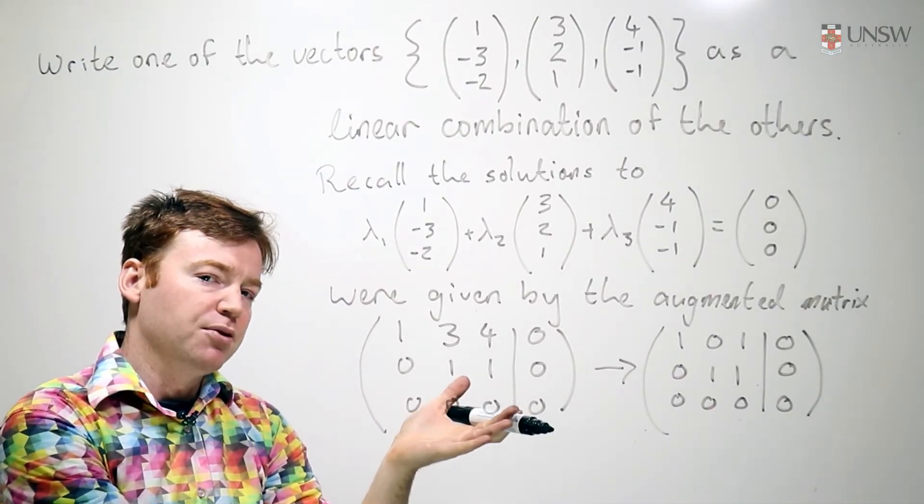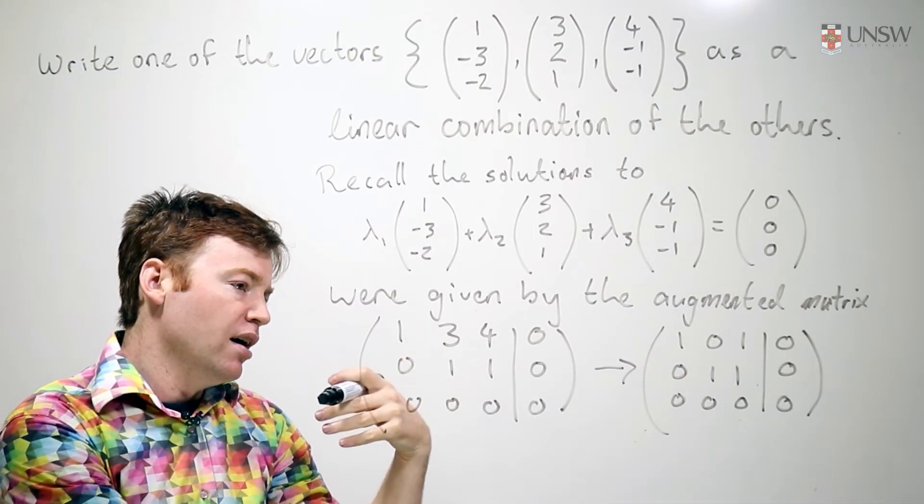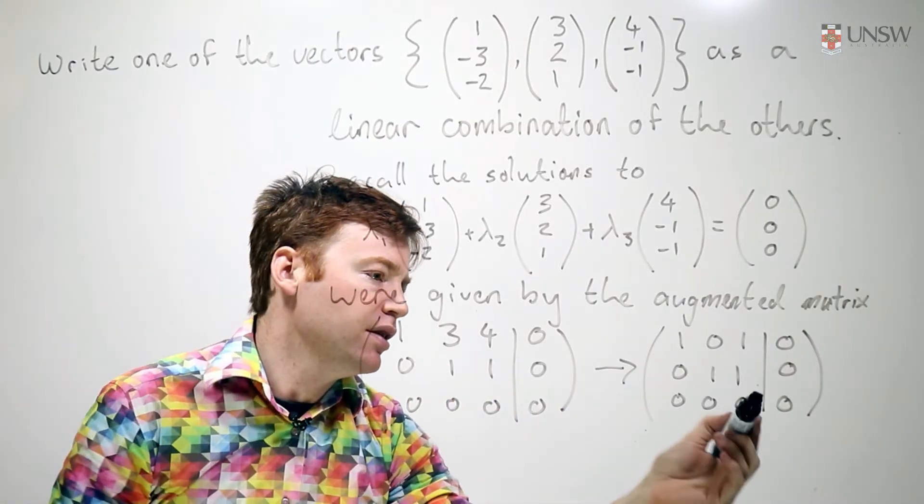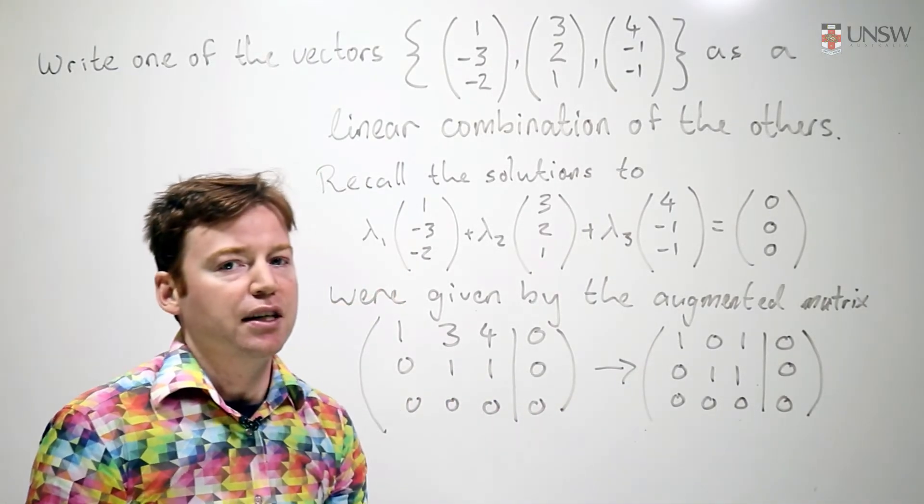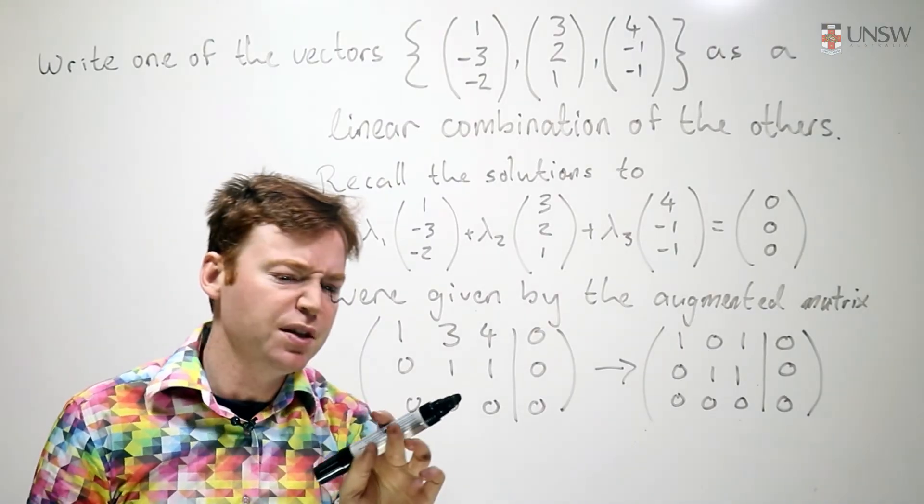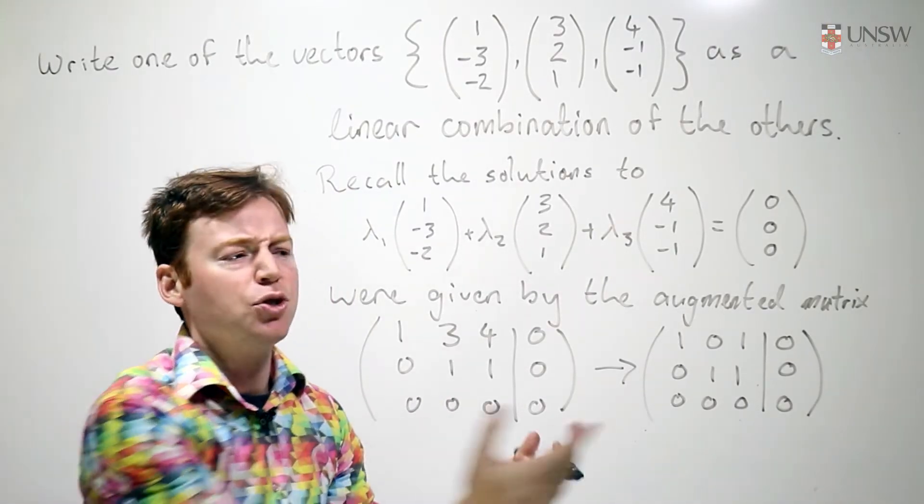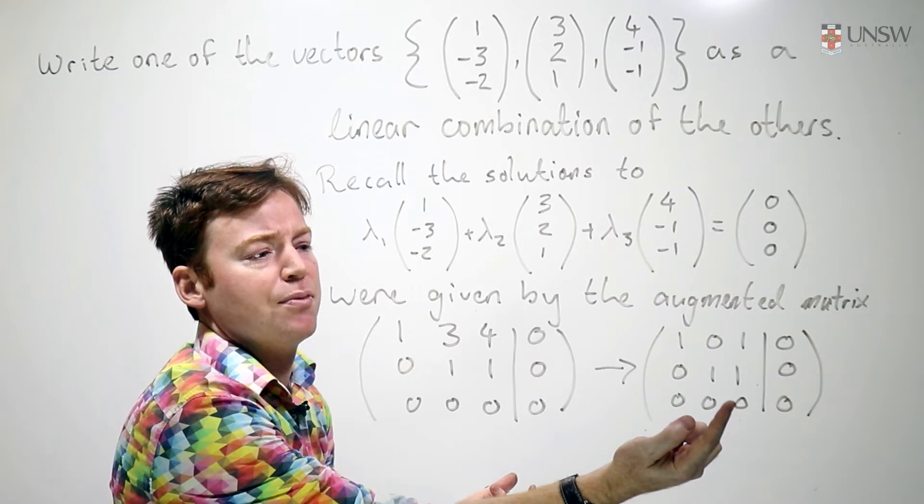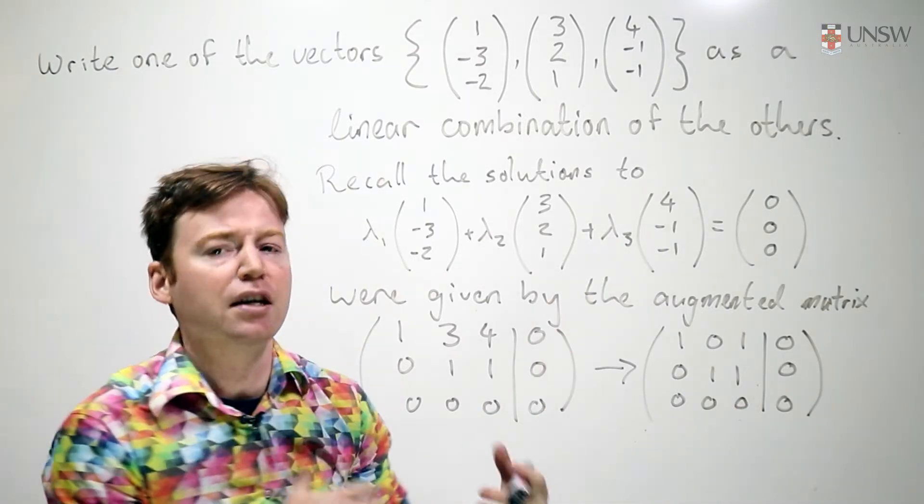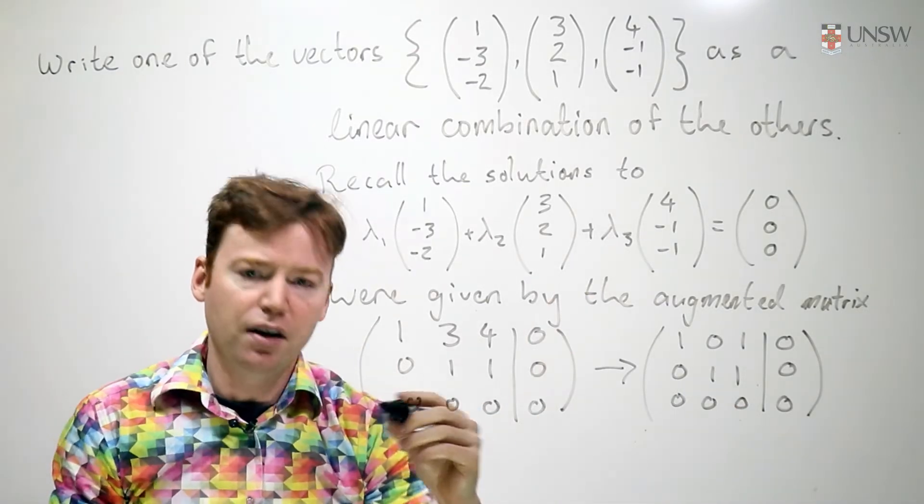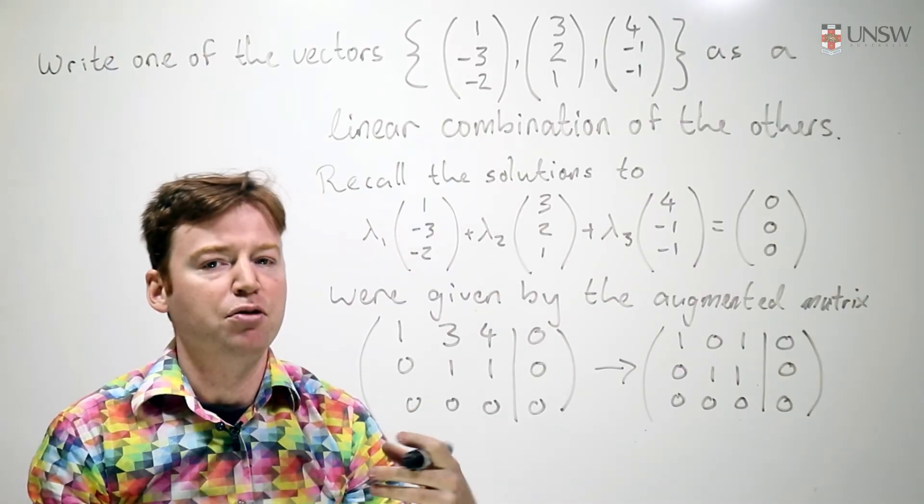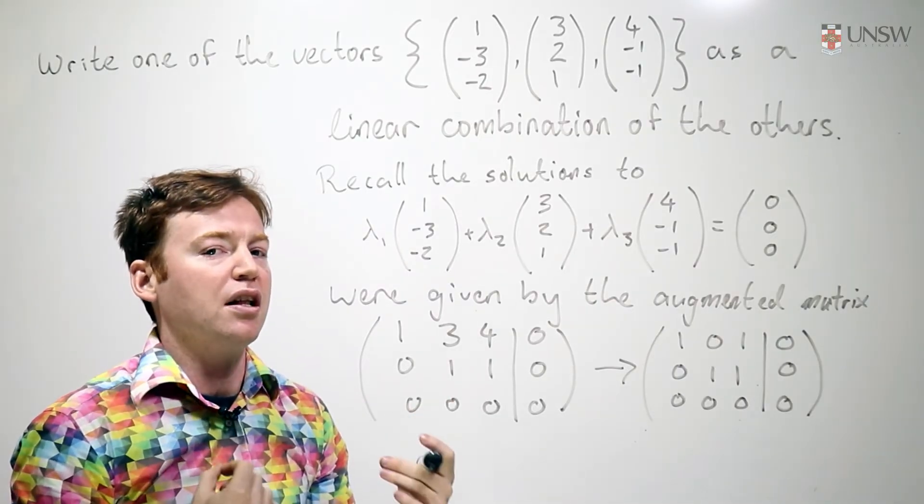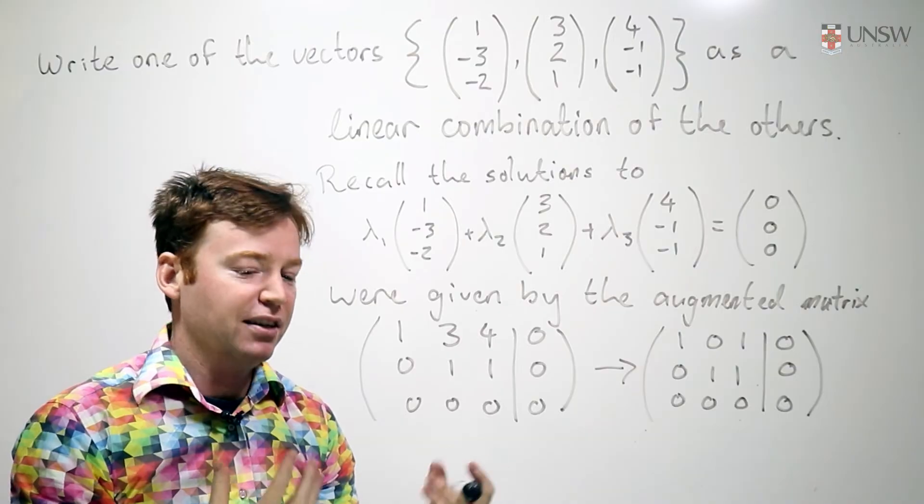The lovely thing about reduced row echelon form is you can easily unpack the solutions. This non-leading column here tells me how to choose my parameter. This is what gives me the infinitely many solutions. I can essentially choose the variable corresponding to this column, which is lambda 3, in any way I like. To indicate that, I'm going to promote lambda 3 and just call it lambda. It's the lambda, the parameter.